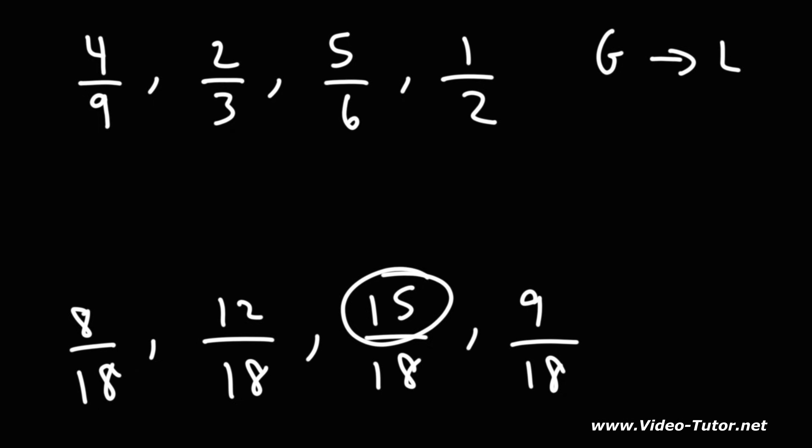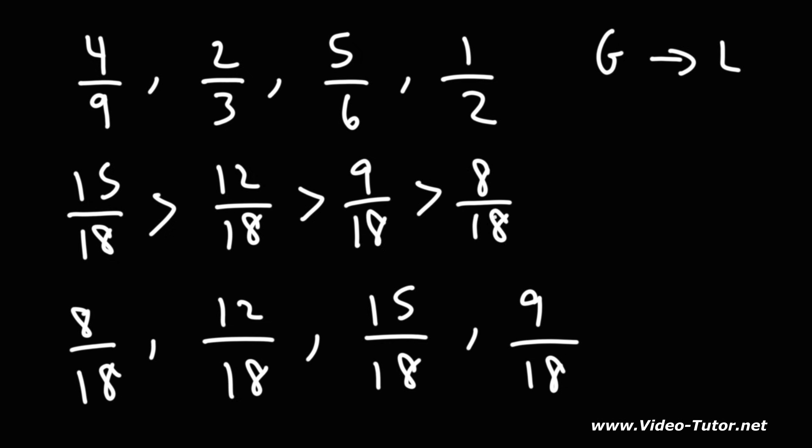Now I want to write this from high to low, greatest to least, so I need to start with the highest number. 15 is the highest, so I'm going to put that first. So it's going to be 15 over 18, that's greater than the next highest number which is 12, so 12 over 18, and that's greater than 9 over 18, which is greater than 8 over 18.